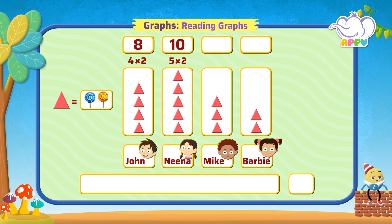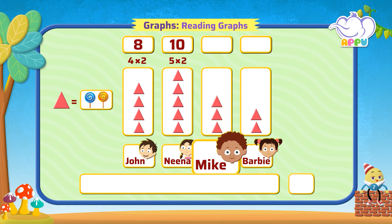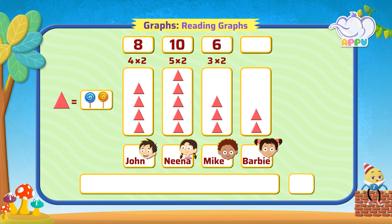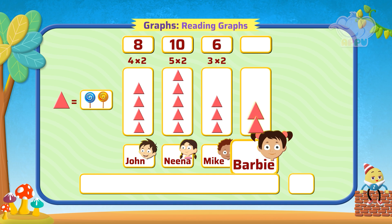There are three triangles for Mike. Since one triangle represents two lollipops, Mike has three times two, that is equal to six lollipops. There are two triangles for Barbie, which is two times two, that is equal to four lollipops.